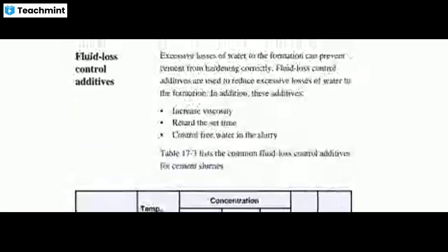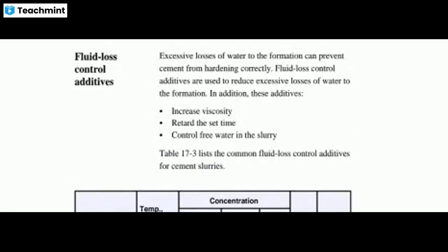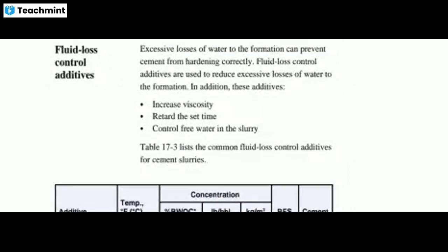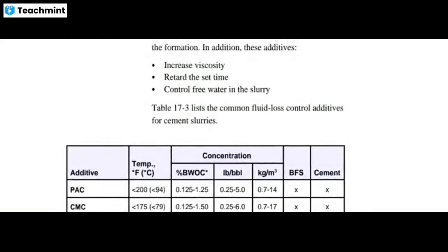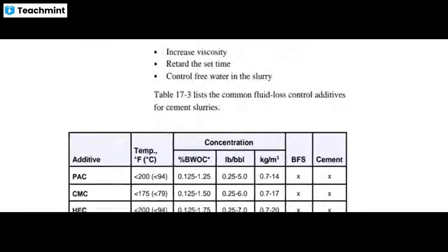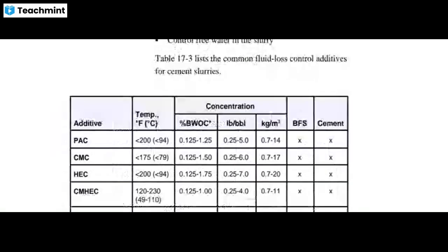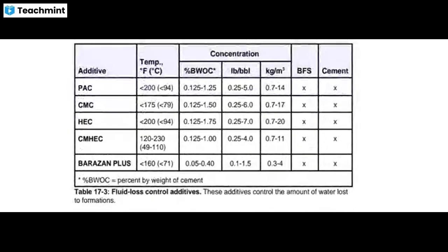Excessive loss of water to the formation can prevent cement from hardening correctly. Therefore, fluid loss control additives are used to reduce this excessive water loss. In addition, these additives increase viscosity, retard set time, and control free water in the slurry. Common fluid loss control additives include PAC, CMC, HEC, CMHC, and Barazon Plus. Temperature and concentration are also shown.